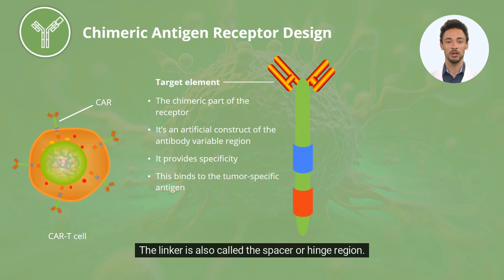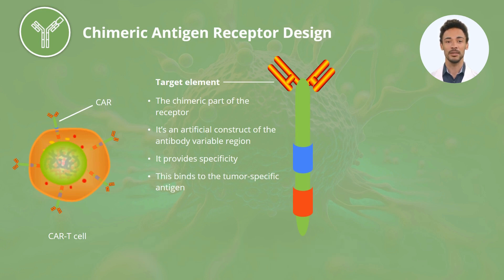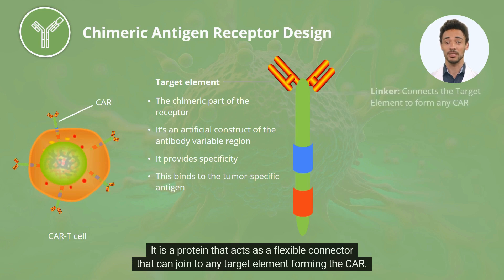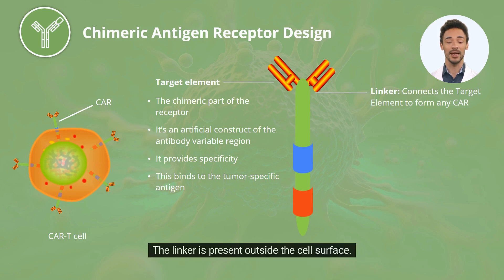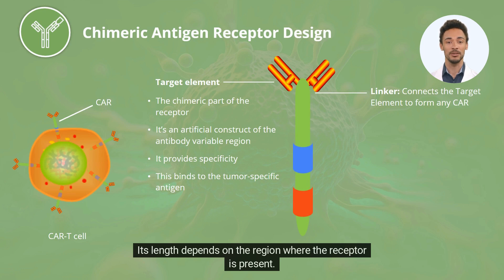The linker is also called the spacer or hinge region. It is a protein that acts as a flexible connector that can join to any target element forming the CAR. The linker is present outside the cell surface, and its length depends on the region where the receptor is present.